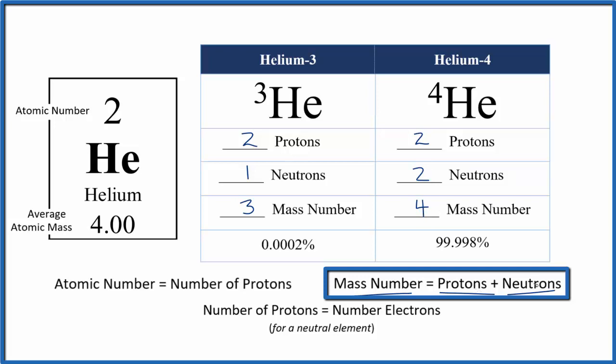So 2 plus 2, protons plus neutrons, gives us the mass number of 4. So helium 4 has two neutrons. But remember again, the neutrons will be different, but the protons and the electrons will be the same.